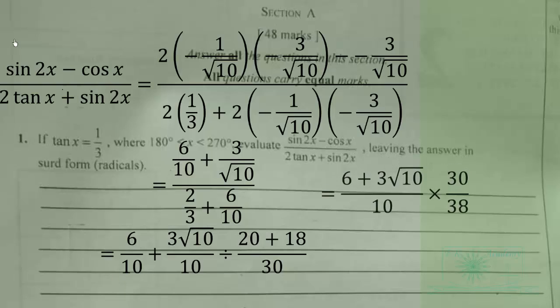We have 6 plus 3 root 10 over 10, and we multiply by the reciprocal of 38 over 30 to get 30 over 38 times 6 plus 3 root 10 over 10.